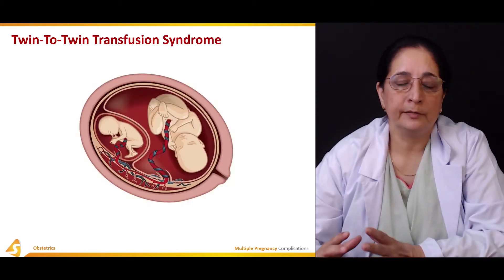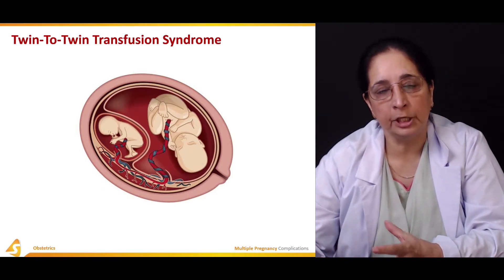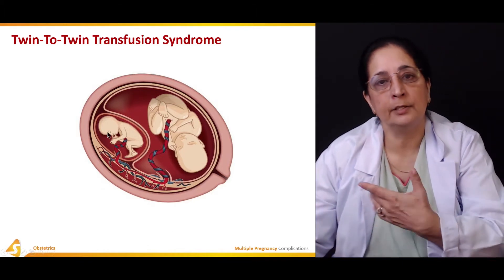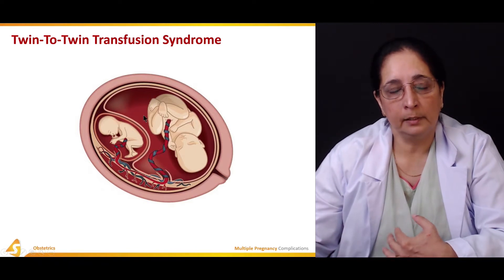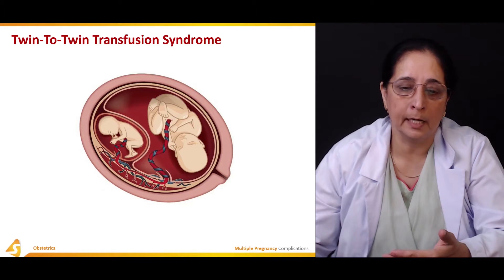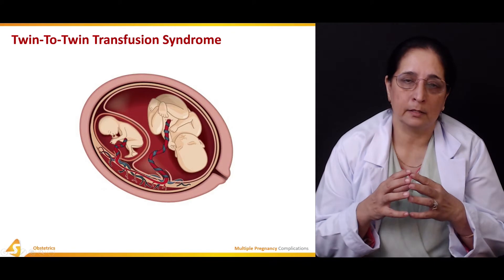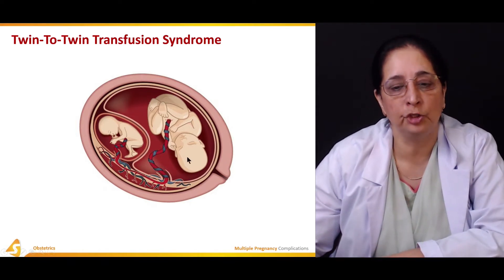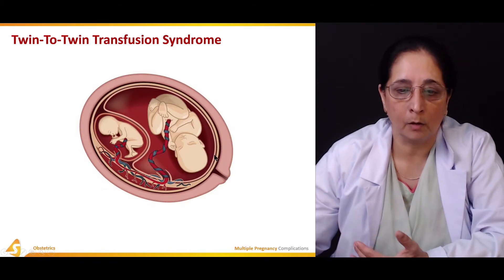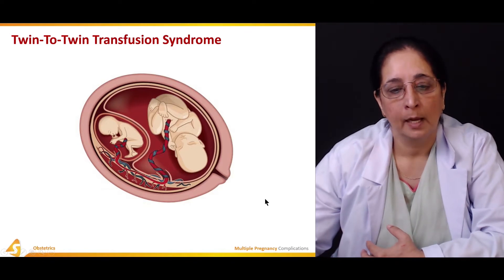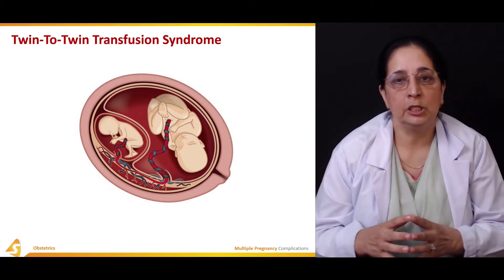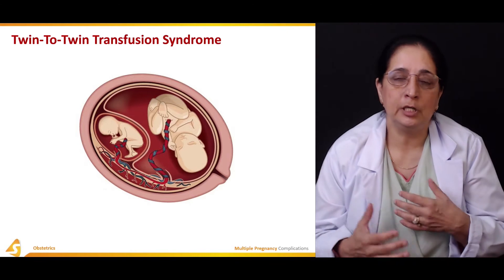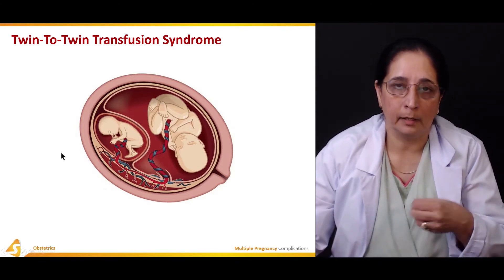Twin-to-twin transfusion syndrome is another complication of twin pregnancy. The donor fetus, from which blood is transfused to the other fetus, becomes smaller due to fetal growth restriction. The recipient fetus, which receives the blood, is usually bigger than normal. This syndrome occurs due to blood vessel complex formation between the two fetuses.